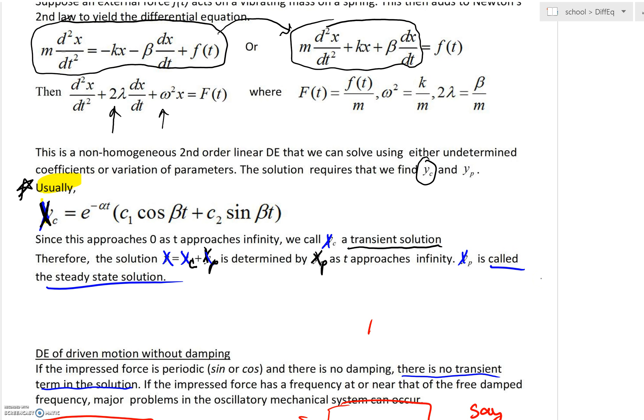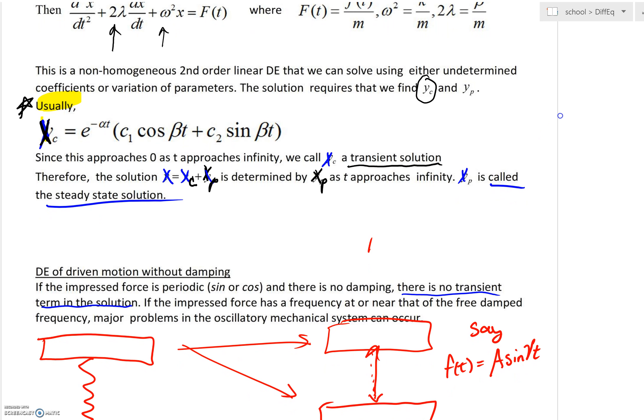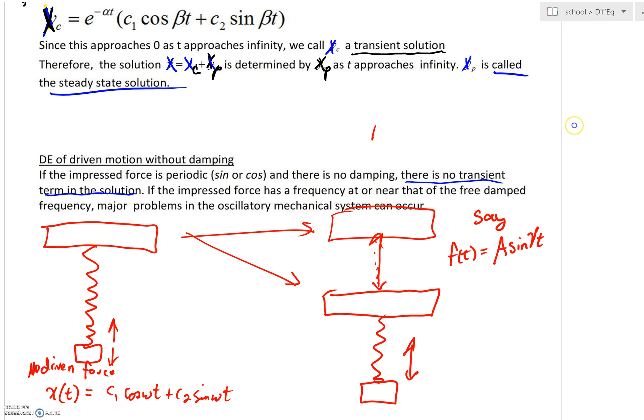x_p is going to be called the steady state solution. A steady state in that transient is only going to be for a limited amount of time, and then x_p would be the steady state.